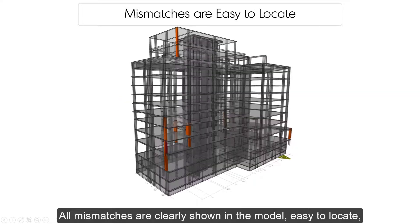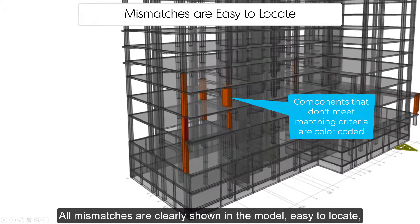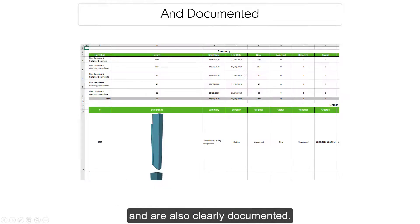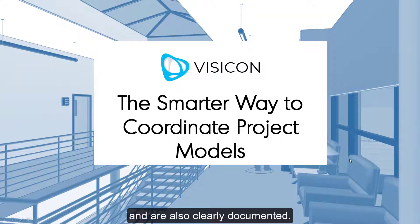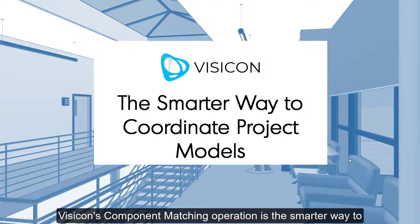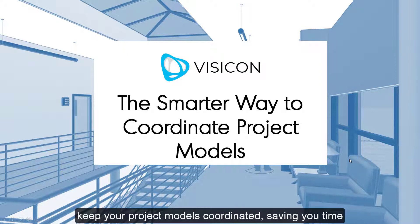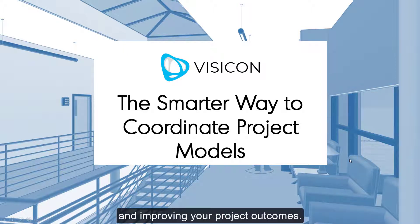All mismatches are clearly shown in the model, easy to locate, and clearly documented. Visicon's component matching operation is the smarter way to keep your project models coordinated, saving you time and improving your project outcomes.